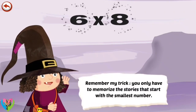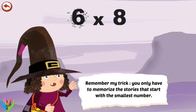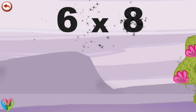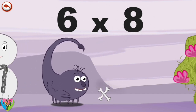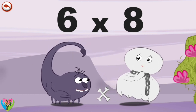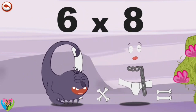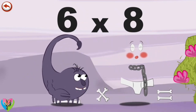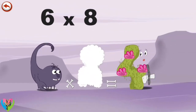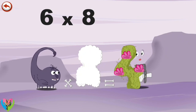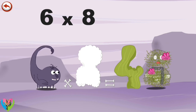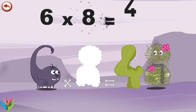Remember my trick. You only have to memorise the stories that start with the smallest number. What's the story of 6 times 8? When Scorpius 6 meets Spooky 8, he can't help playing a trick on him and lifts up his sheet. Poor Spooky 8 suddenly feels a draught. Feeling very embarrassed, he hides behind a cactus in the shape of a 4, and makes himself some clothes out of thorns and flowers. Spooky 8 has regained his shape of an 8. 6 times 8 is 48.